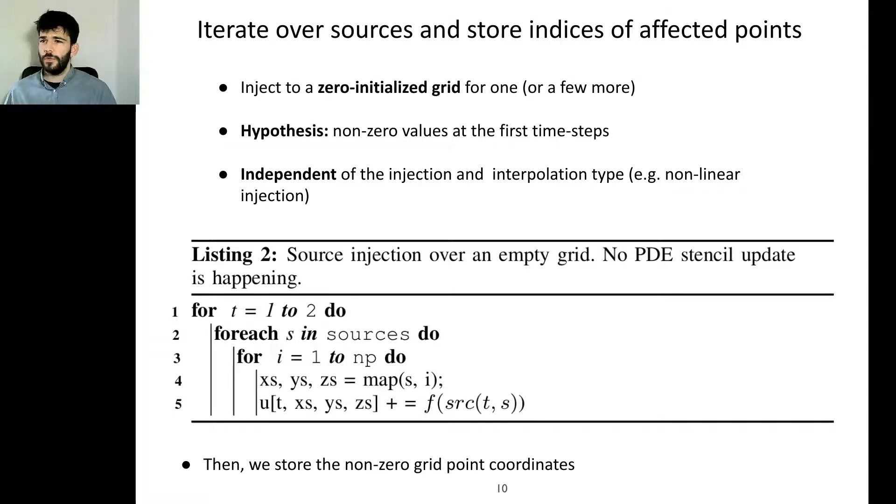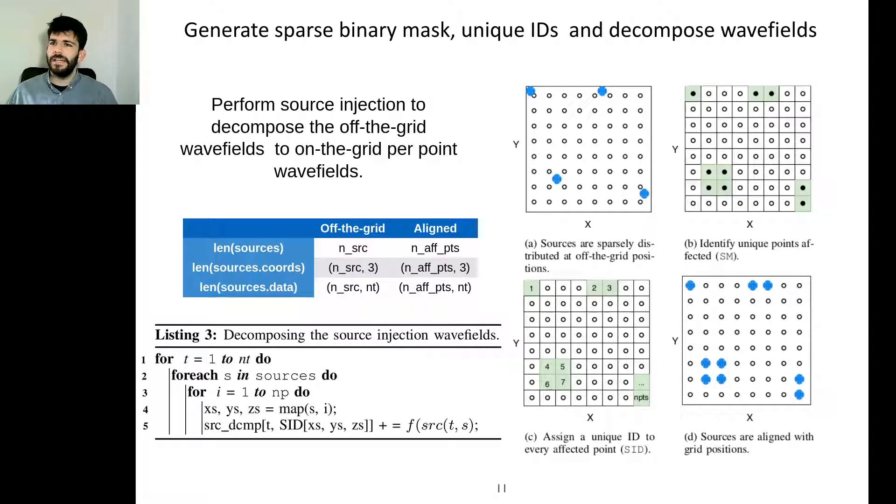The first step of our scheme is we iterate over the sources and we use a zero-initialized grid to inject just for a few time steps. We make the hypothesis that sources do not have zero amplitude at any point. After we have done this injection we have a grid with values only at the points that have been affected from a source. Since there is no stencil kernel update happening, there is no actual wave propagation but only a few points that are not zero anymore. For example you can see in this figure some sources that are off the grid and how they affect some points respectively.